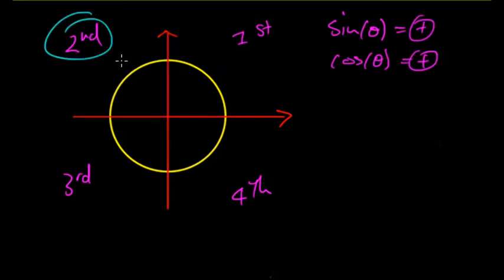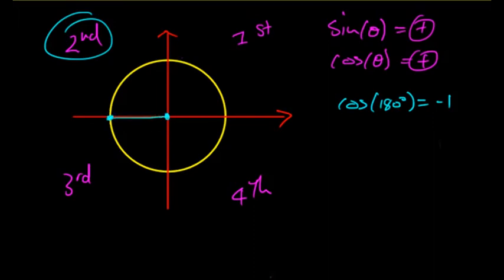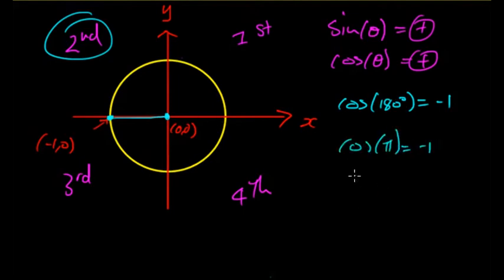In the second quadrant this is not the case. Cos 180° = −1, not +1. That's because going from the origin to the outside of the circle in that direction, the x-coordinate is −1, since that point is at (−1, 0) on the axes. So cos 180° or cos π = −1. Sine 180° = 0 because there's no vertical component.